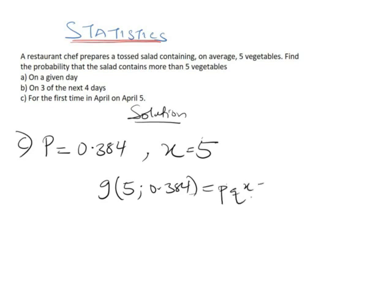It's going to be p times q to the power X minus 1, which is the same thing to say 0.384 multiplied by 0.616 to the power 4. If you press your calculator, this value is going to be 0.0553.